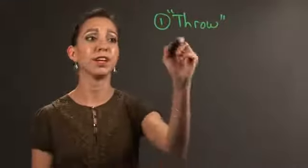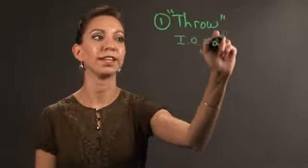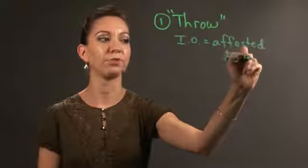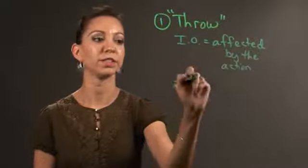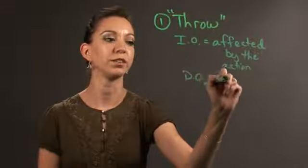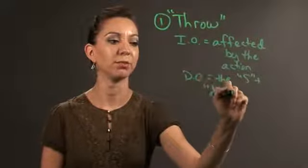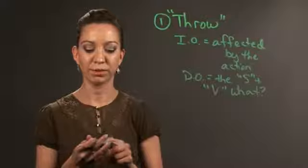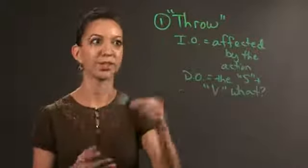Clarify with them that the IO is the person or thing affected by the action. The direct object is the actual thing that receives the action, or the subject plus verb, the answer to that question. So if the question is Tommy throws a marker, Tommy throws what? Marker is your direct object.